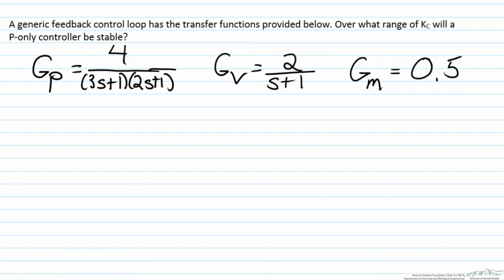If tuned incorrectly, a controller can make a stable process unstable. So we want to determine over what range of KC will this happen, or from the other side where will it be stable so we know what range of values we can potentially utilize.